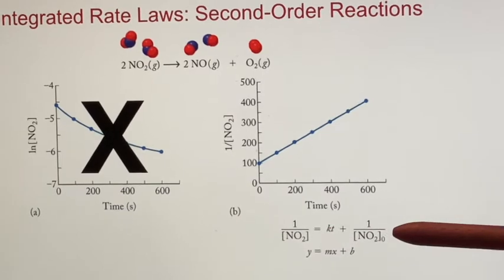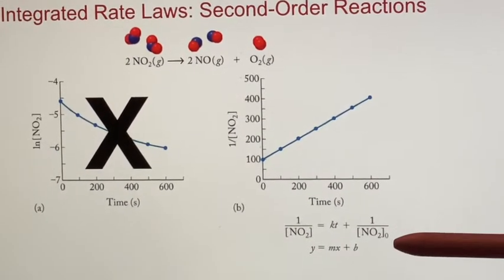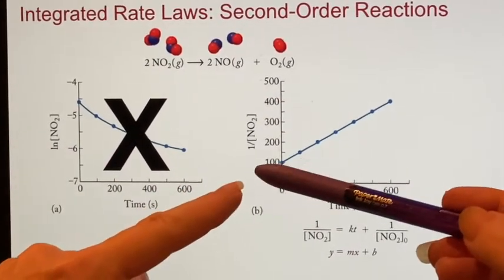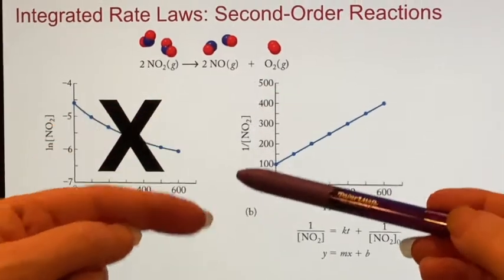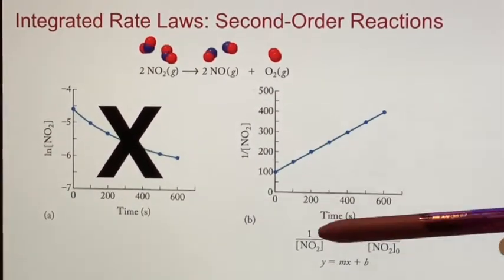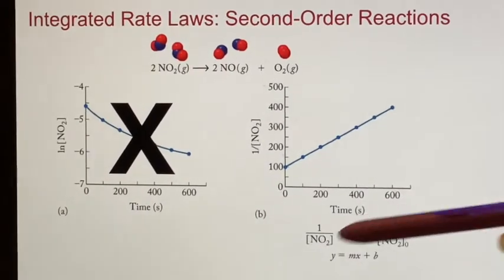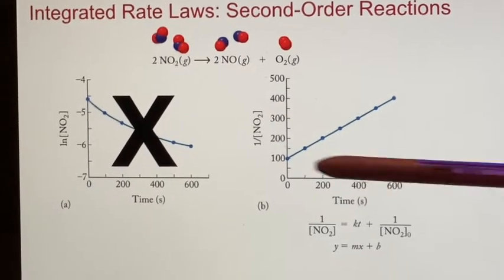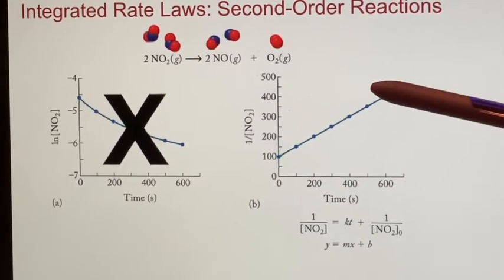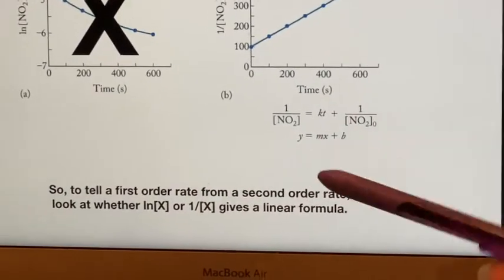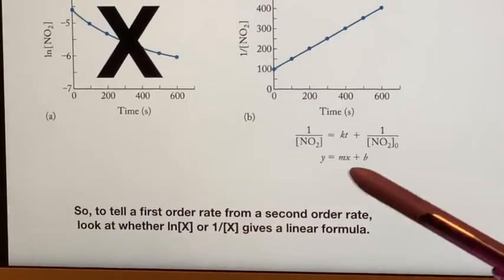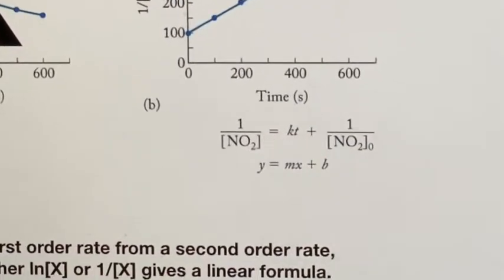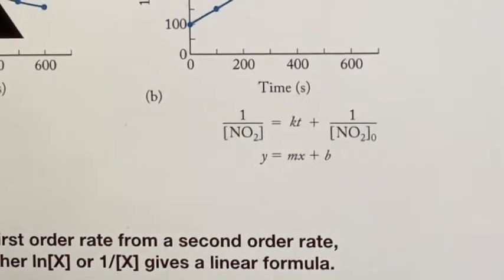Here is your integrated rate law for a second order reaction, in particular for this chemical formula. You see here it says one over the concentration, and because of the fact that it's one over, instead of gradually declining, it's going up. But the point is, if it is actually second order, if you plot one over the concentration versus time, you'll end up with a straight line. You can look at this as Y equals MX plus B, so the intercept is one over the original concentration, M is still K, and Y is one over the current concentration.